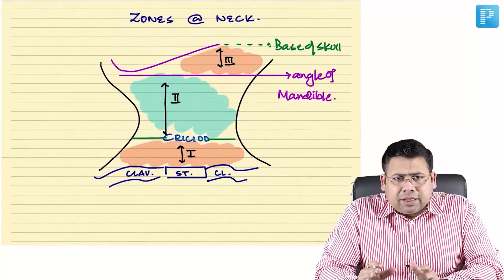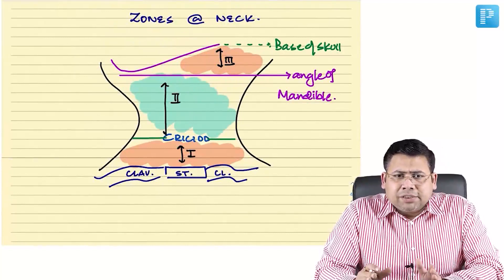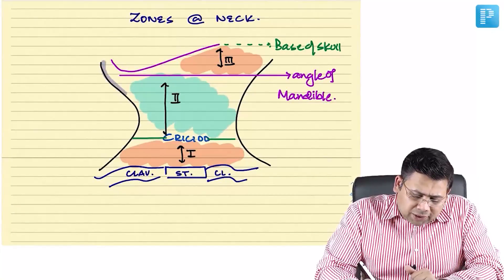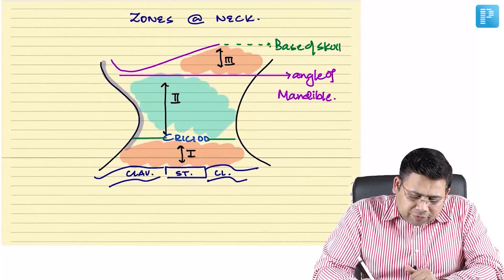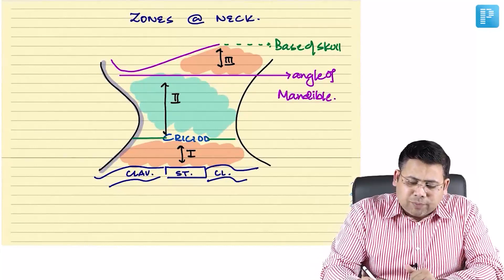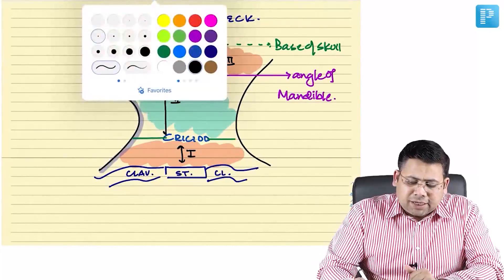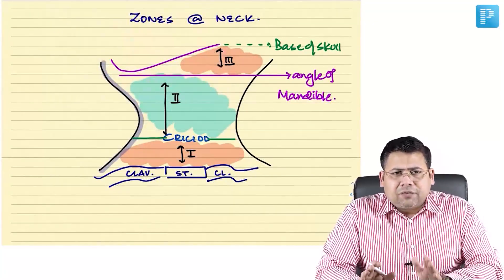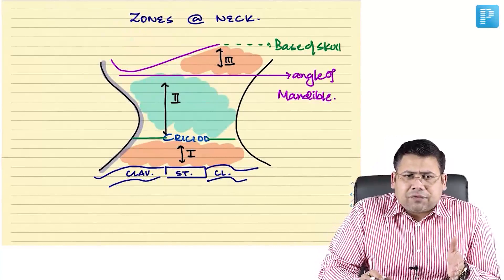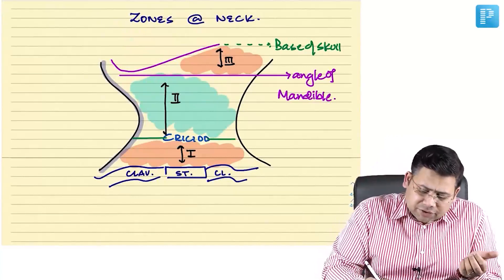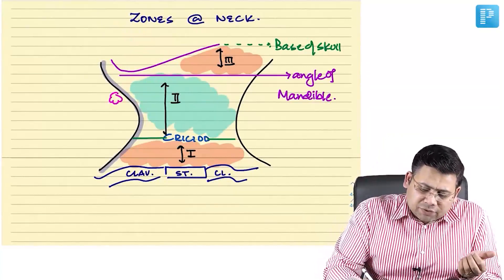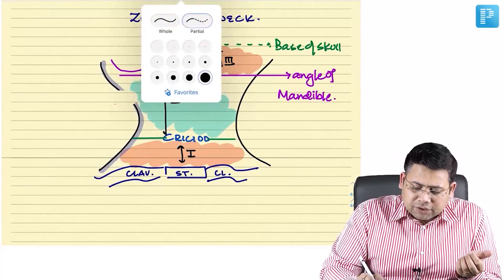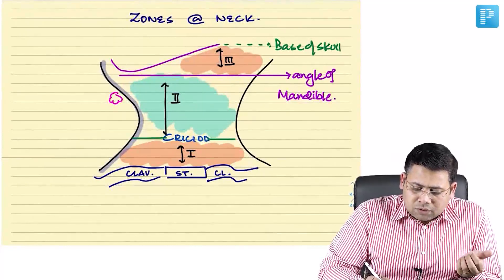In the neck, you can have a blunt injury or a penetrating injury. When will you tag an injury as penetrating? Any injury which negotiates through the superficial cervical fascia into the deep cervical fascia will be classified as a penetrating injury.